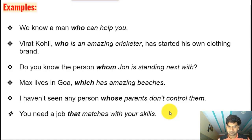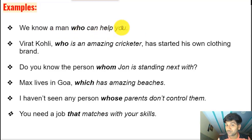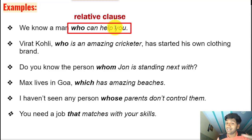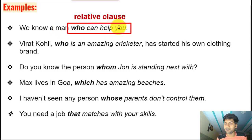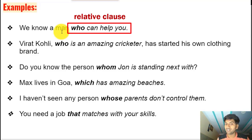Let me show you some examples. 'We know a man who can help you.' Here 'who' is the relative pronoun coming at the beginning of the relative clause 'who can help you,' identifying the noun 'man.' It gives essential information — we're not talking about any man, but a specific man who can help you. 'Who' works as the subject of this clause.